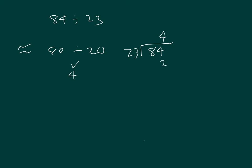4 times 3 is 12. 2, regroup of 1. 4 times 2 is 8, plus 1 is 9. Uh-oh. We can't subtract 92 from 84. Therefore, we revise our estimate to 3.